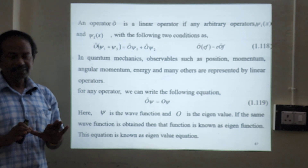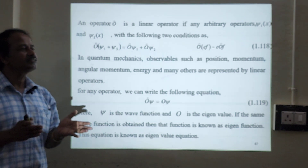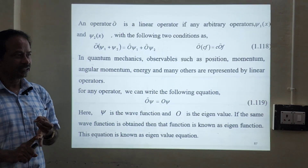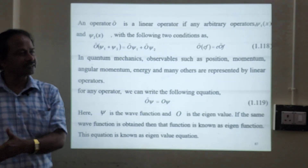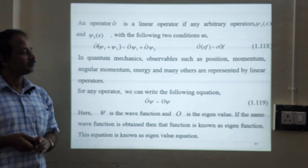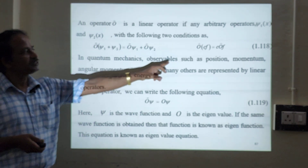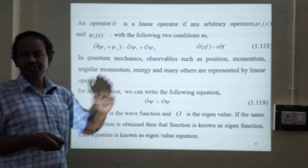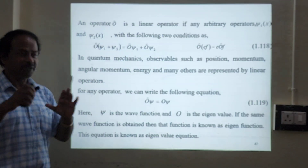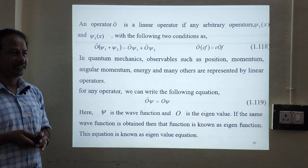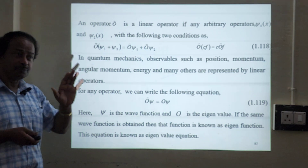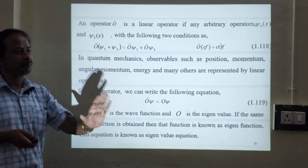These observables are associated with operators. In quantum mechanics, all dynamical variables which depend on position and momentum are called observables. For example, observables can be position, momentum, angular momentum, energy, and many others. So they are all linear operators. All observables are associated with operators.